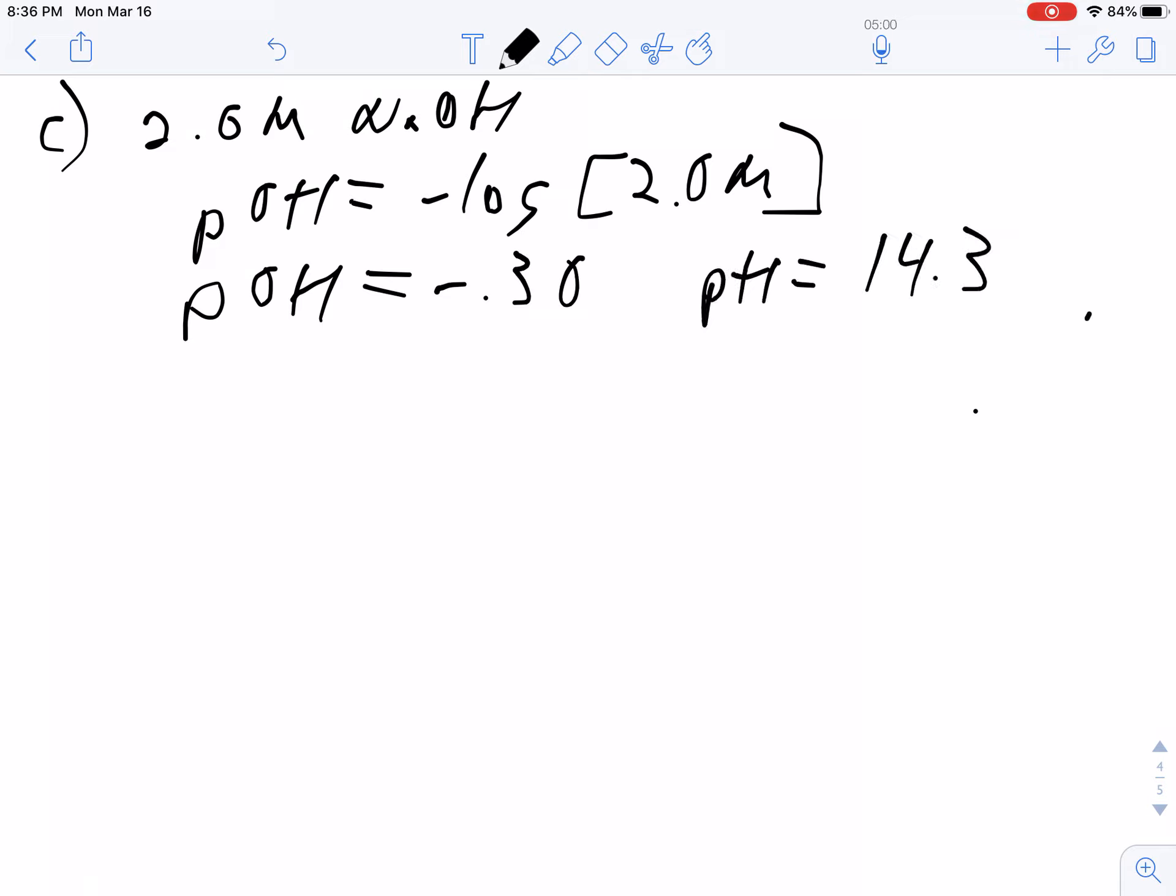Letter C: It's a 2 molar solution of hydroxide, so the pOH is negative log of 2 molar. The pOH is negative 0.3, and therefore the pH would be 14.3.